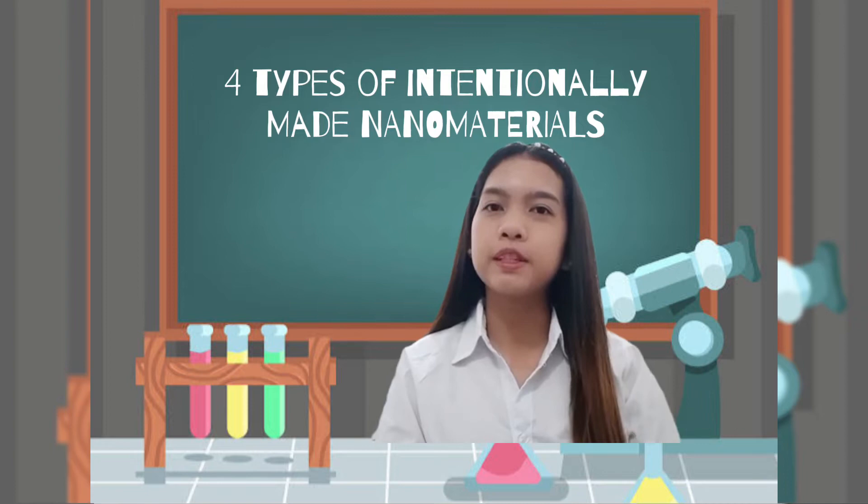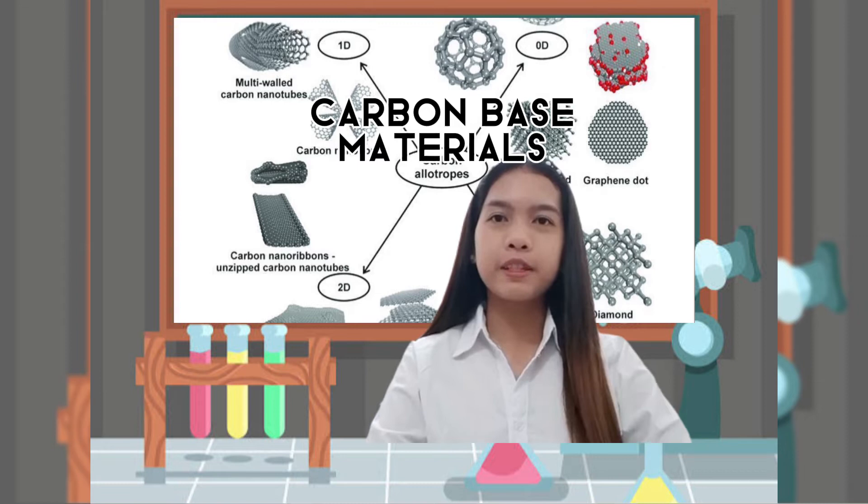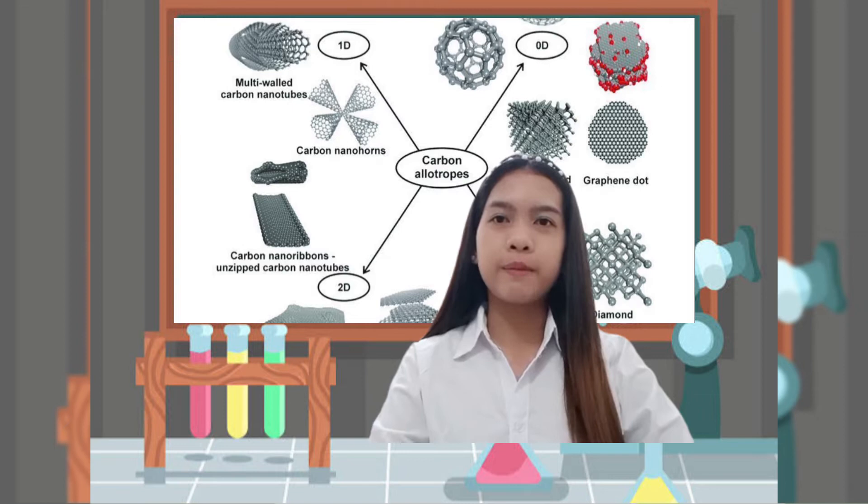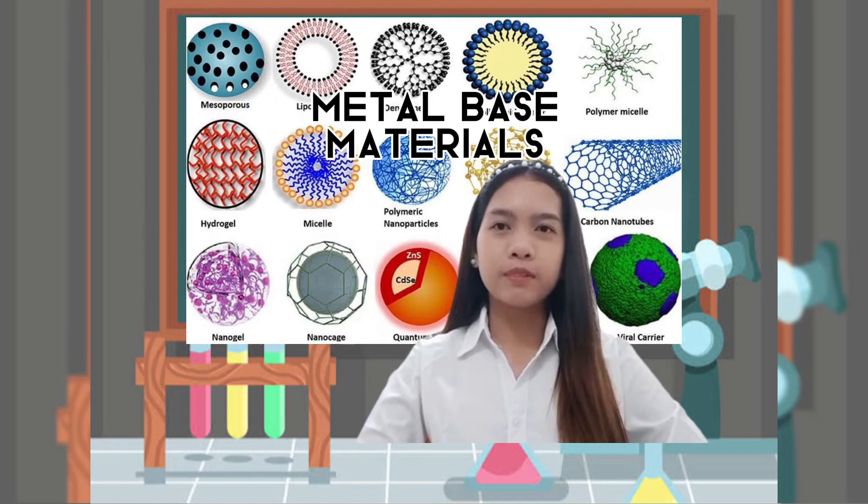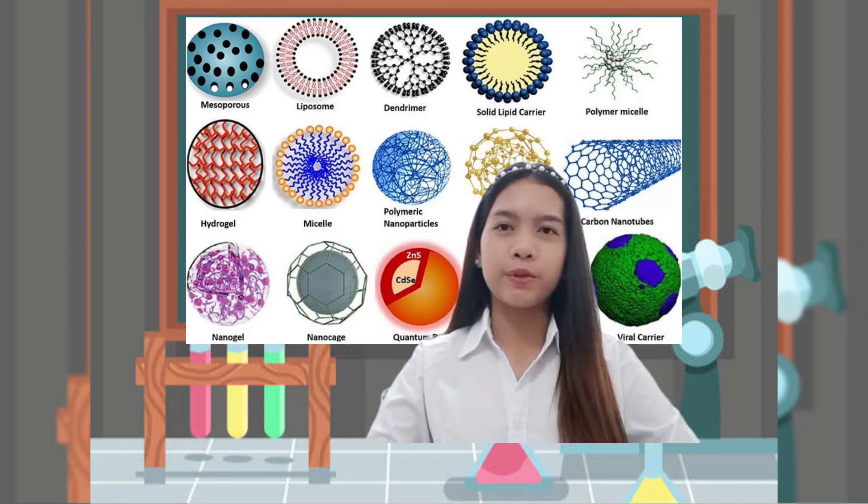There are four types of intentionally made nanomaterials. The first one is carbon-based materials, which are intentionally produced for their needs and include carbon nanotubes and buckyballs. The second one is metal-based materials, which includes quantum dots, nanogold, nanosilver, and metal oxides such as titanium dioxide.